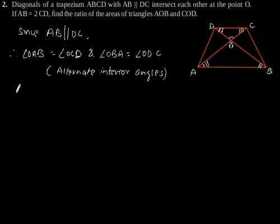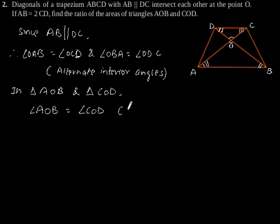Now, in triangle AOB and triangle COD, angle AOB is equal to angle COD since they are vertically opposite angles.